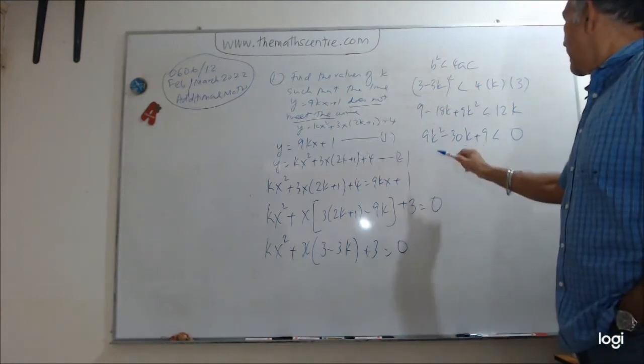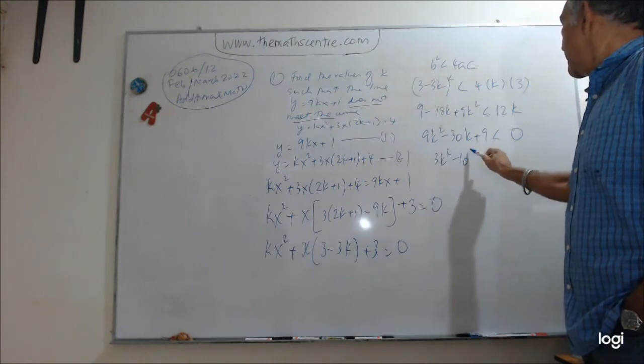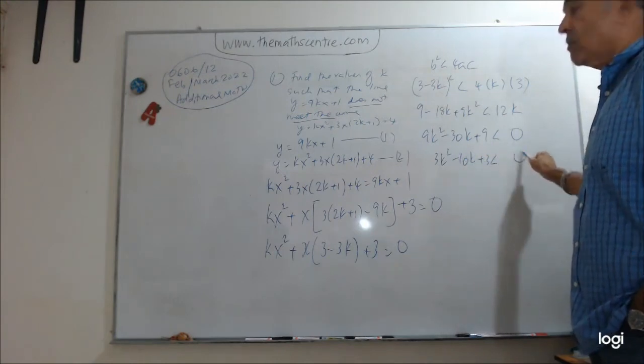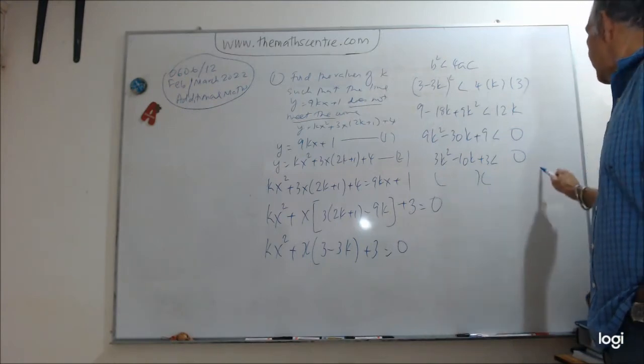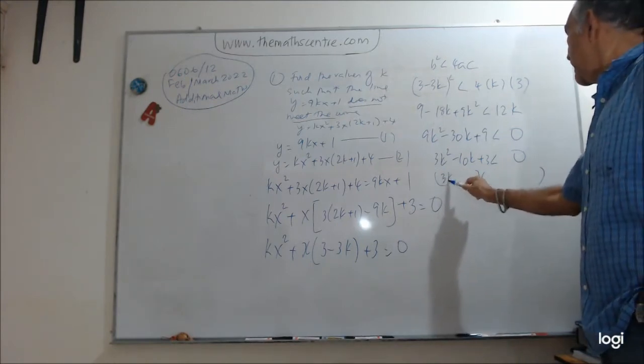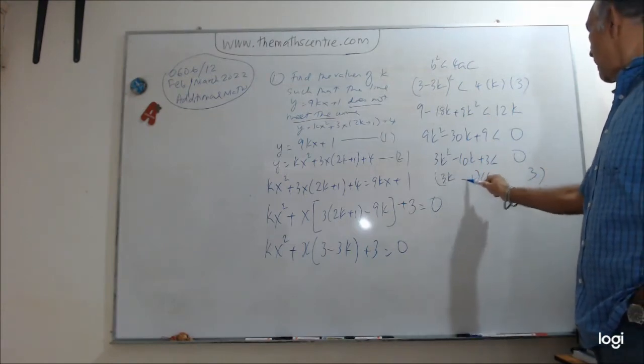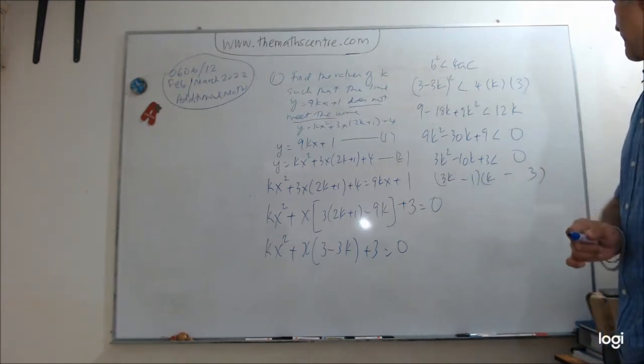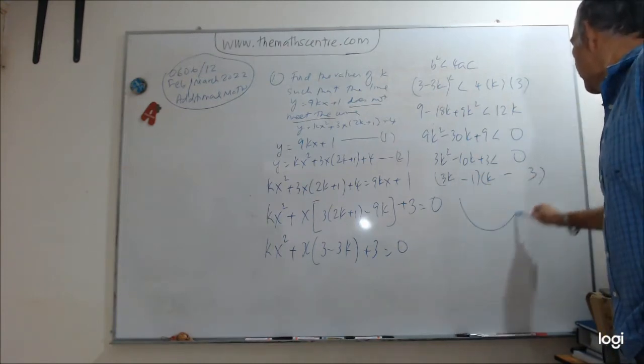So divide by 3. 3k squared minus 10k plus 3 less than 0. All good. So now let's go and factorize this. I have 3k and I have k and I have 3 and I have 1. Looks good. So I have minus k and minus 9. And k is minus 10k. Excellent.